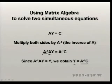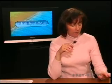What do I mean by the inverse of A in matrix algebra? The inverse of a matrix is where when you multiply matrix A times its inverse, it results in something called an identity matrix. Every single value within that identity matrix is going to be equal to 1.